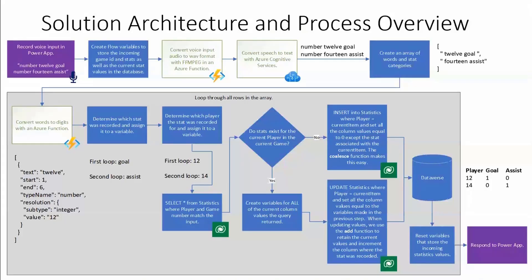Let me tell you how it works. We have this deck available after the call if you want to dive in more. I'm going to give you a high-level overview. We start in the top left and say something to our Power App, like 'number 12 goal, number 14 assist' — exactly how we say it into the app. The Power App takes that audio data and throws it at a Flow, along with the ID of the game. From this point all the way until we get back to purple, we're in a Flow. The first thing the Flow does is call an Azure Function to use FFmpeg to convert the audio format to WAV.